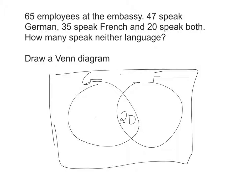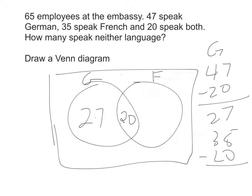For the Germans, I know there's 47 in total, and I've already accounted for 20 of them, so that leaves 27 left over. For the French speakers, there's 35 minus 20, that's 15.